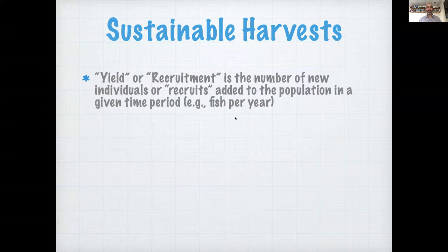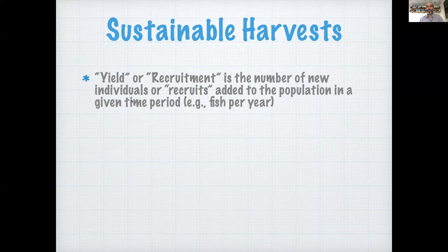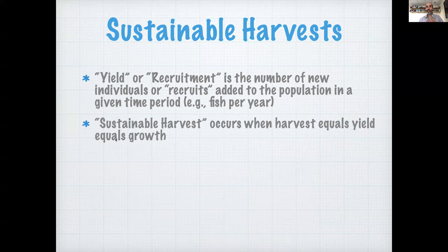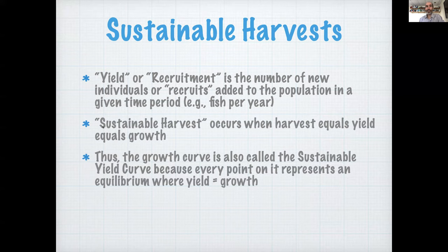So that leads us to the idea of sustainable harvests. If we define yield or recruitment as the number of new individuals or recruits that come into the population at any point in time, so the amount that you're growing back each year is that recruitment, then sustainable harvest will occur when the harvest and the recruitment are equal. So the harvest equals the yield equals growth. Because of this, the growth curve can sometimes be referred to as the sustainable yield curve, because every point on the growth curve represents a potential equilibrium point where yield equals growth. So you could imagine that there are different points on that curve that each could be a new equilibrium depending on how much harvesting is occurring.